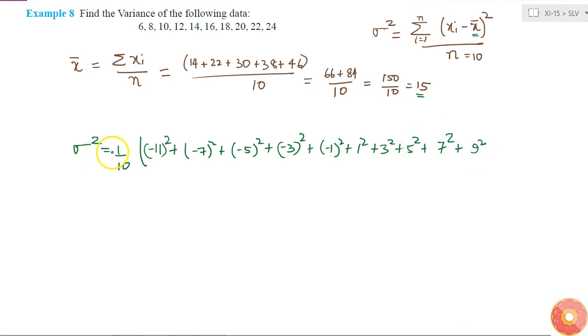Oh I'm sorry, here also it is minus 9 square. Okay, so what will that be? 1 by 10 of 81 plus 49 plus 25 plus 9 plus 1. I can see that here the same terms are repeating again, so I can simply write it two times of this sum. So this is equal to 1 by 5.